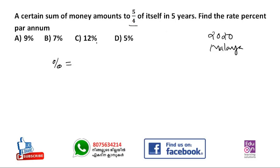If you look at the chart, it's 5 equal to 4. I'll show you the chart using the shortcut method.